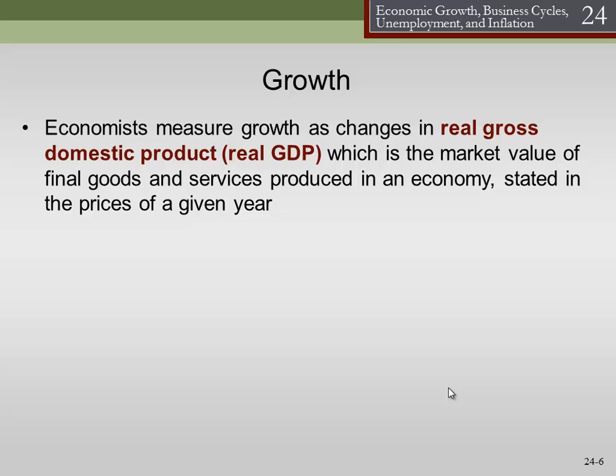We've also got another problem: population changes. Who should have a bigger economy — the United States or Iceland? The US, because we've got a whole lot more people. And who should have a bigger economy, the US or China? China, because they've got a whole lot more people to feed. So we divide real GDP by the current population to get real GDP per capita — or as the British say, per head.